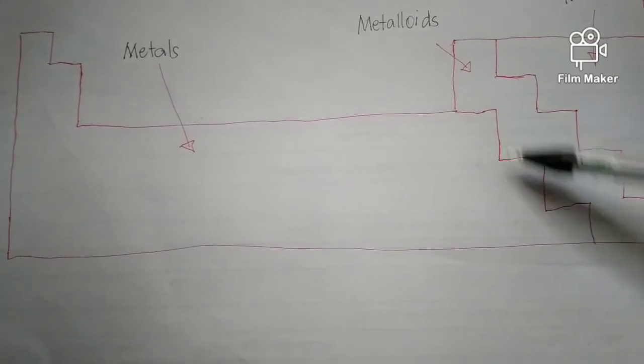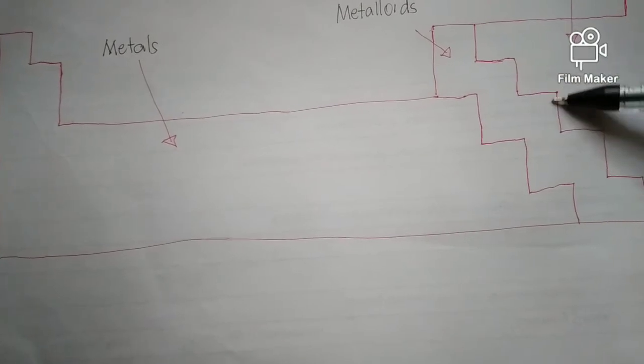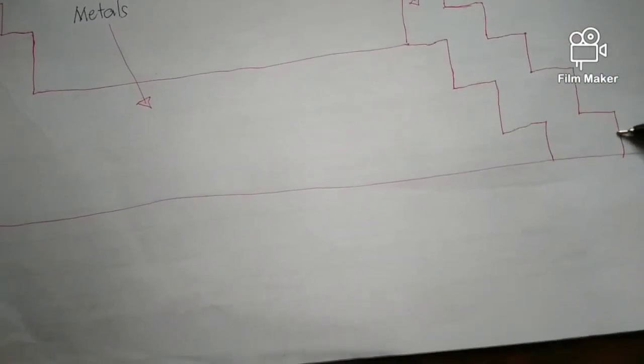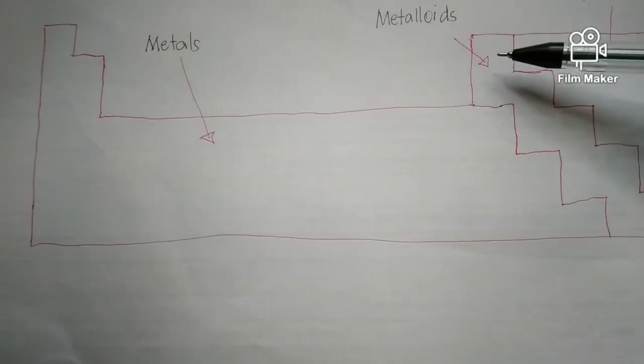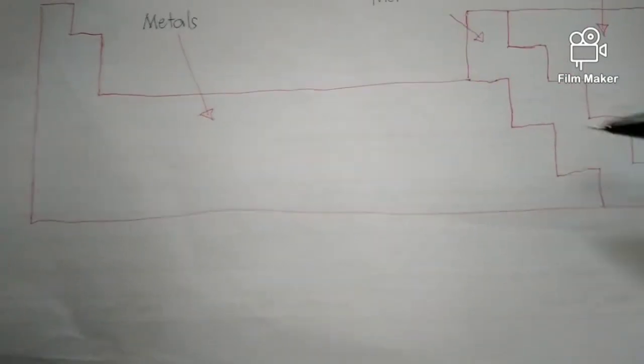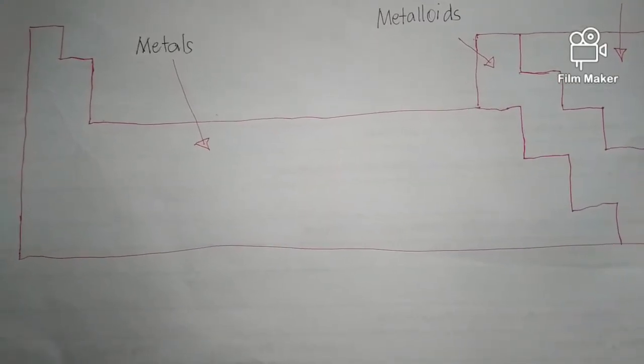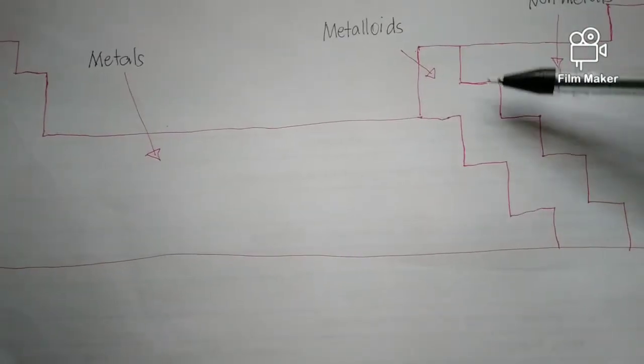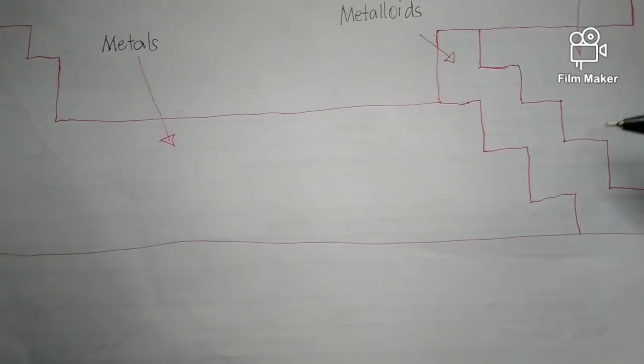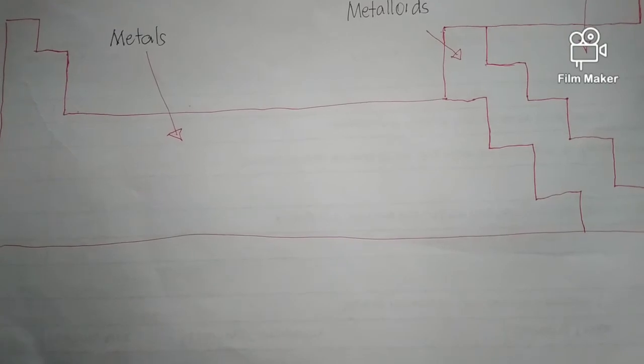These are the metalloids. Elements that are considered metalloids have properties that are partial metallic or partial non-metallic. They are in between metals and non-metals, so they exhibit properties like metals and they also exhibit properties like non-metals.